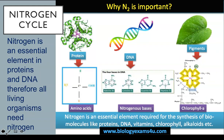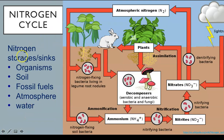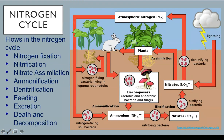Nitrogen is an essential element in proteins and DNA, and therefore all living organisms need nitrogen. Nitrogen is arguably the most important nutrient in regulating primary productivity and species diversity in both aquatic and terrestrial systems, which is why we are discussing the nitrogen cycle. Nitrogen sinks include organisms, the soil, fossil fuels, the atmosphere, and water. Flows in the nitrogen cycle include nitrogen fixation, nitrification, nitrite assimilation, ammonification, denitrification, as well as feeding, excretion, death, and decomposition.